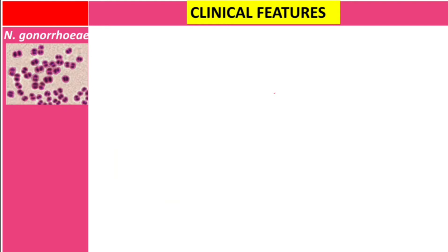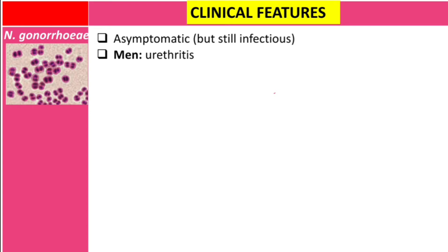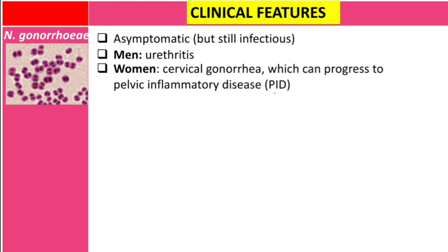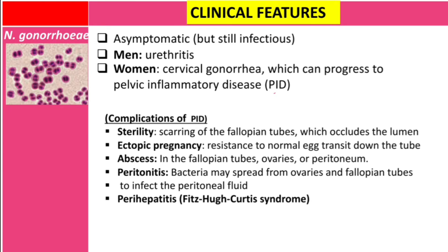Now let's talk about clinical features. We can classify gonorrhea into three groups: gonorrhea in men, in females, and in neonates. In both cases gonorrhea can be asymptomatic, but the patient will still be infectious. In men it mainly causes urethritis — inflammation of the urethra. In women it causes cervical gonorrhea, which can progress to cause pelvic inflammatory disease, or PID. A complication of PID is infertility, caused by scarring of the fallopian tubes.